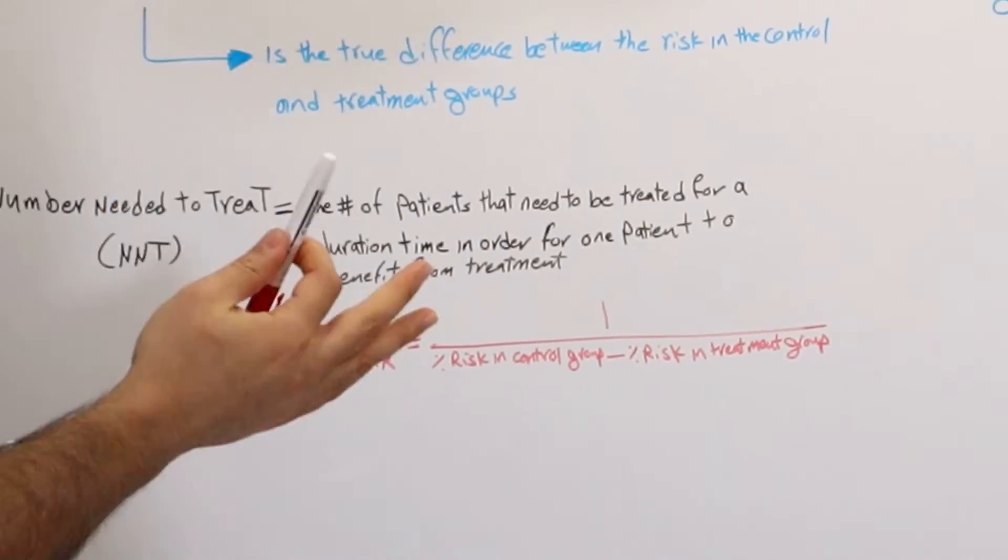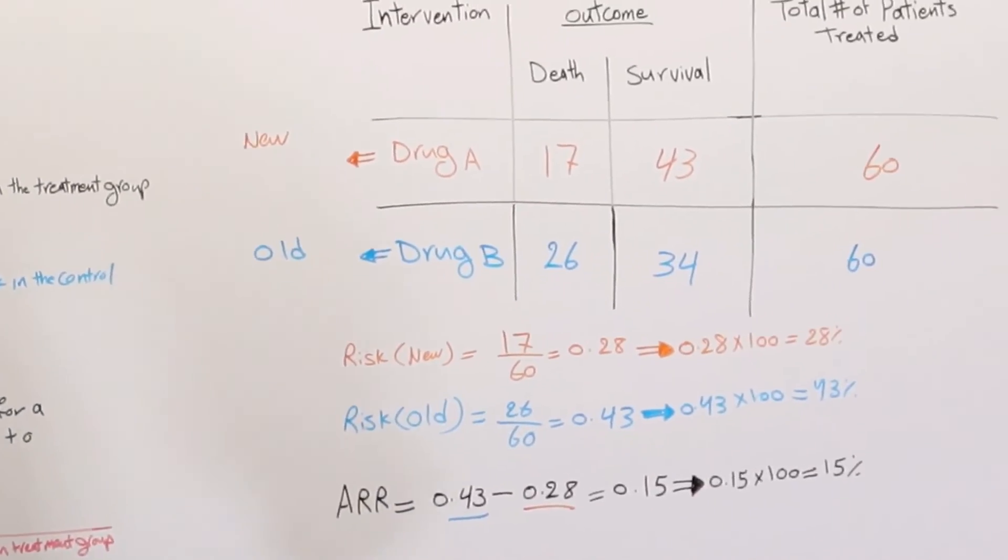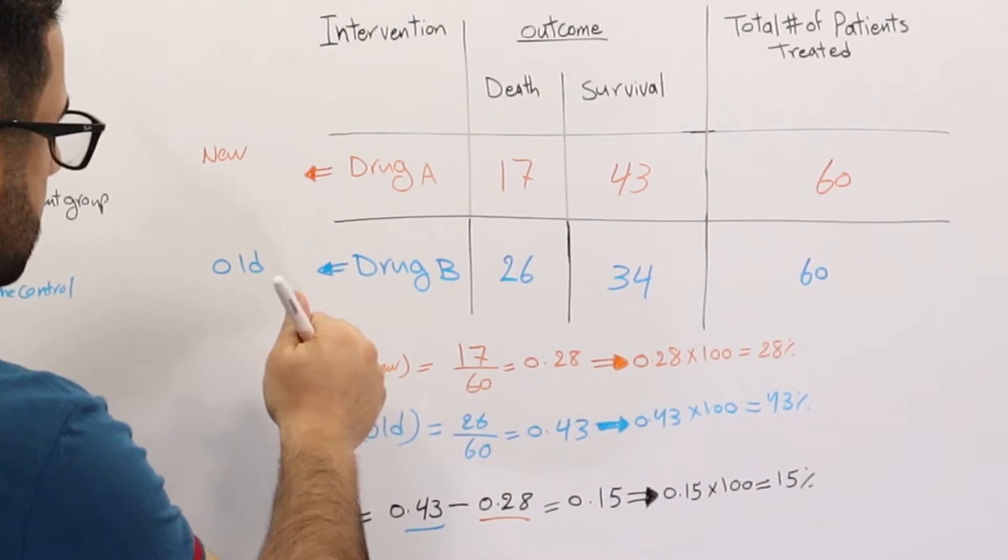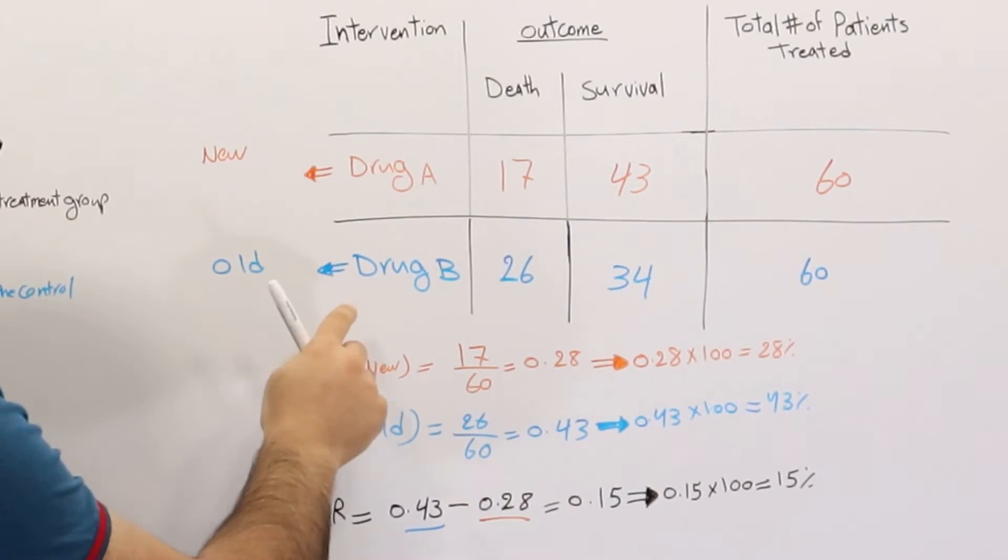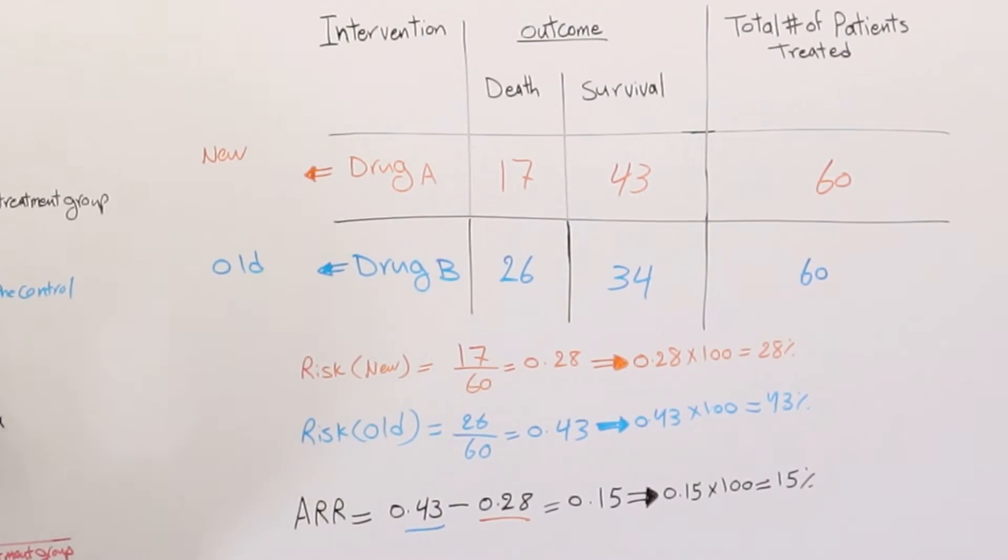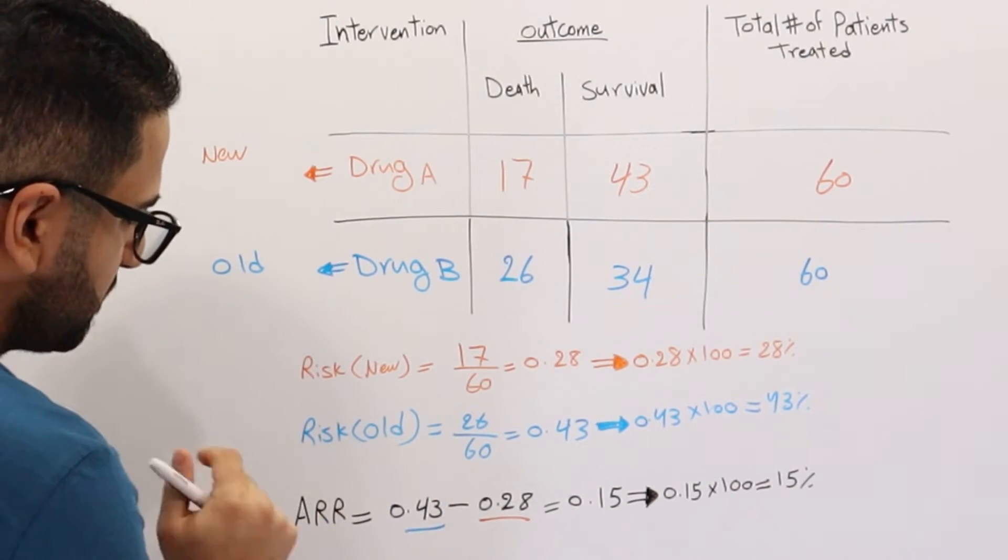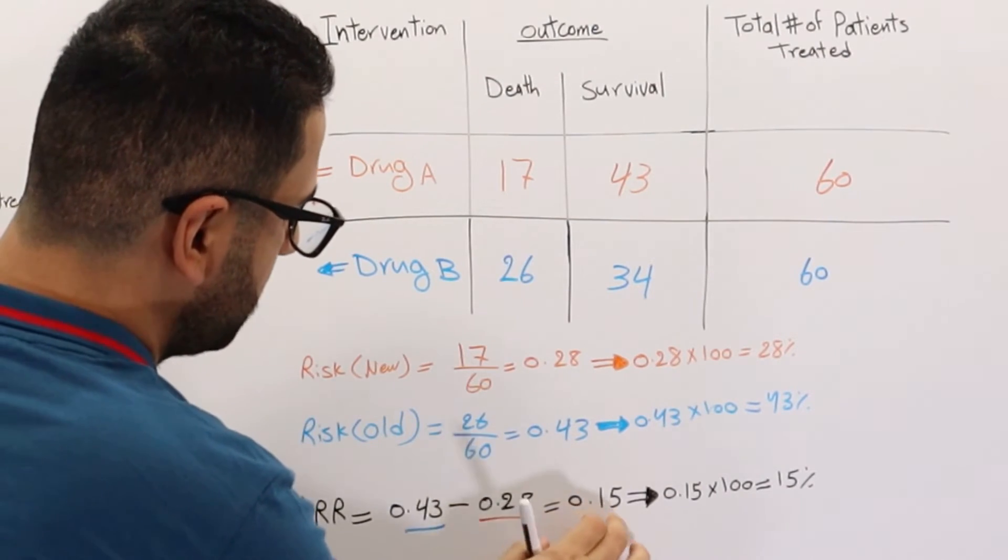So let's go to the previous example that I used for the new drug A, comparison to the drug B over here, which is the old one. And from this example, we found out that the absolute risk reduction was 0.15.